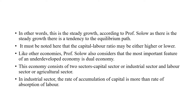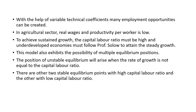In the case of an underdeveloped economy, the economy consists of two different sectors. One is the capital sector, or the industrial sector, which uses more capital than labor. On the other hand, we have the labor sector or agriculture sector, where the intensity of labor is more compared to the use of capital. In the industrial sector, the rate of accumulation of capital is more than the rate of absorption of labor, whereas in the agriculture sector the reverse is true.